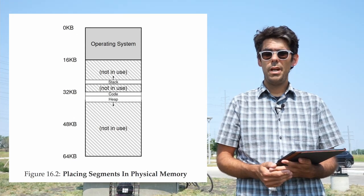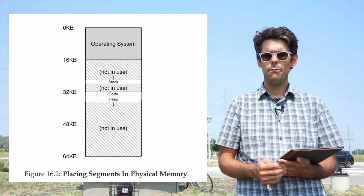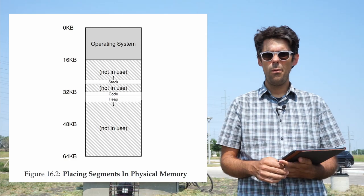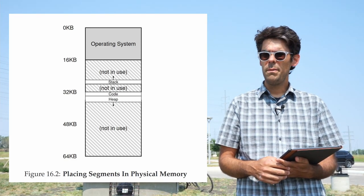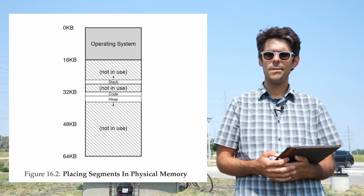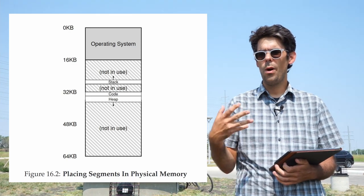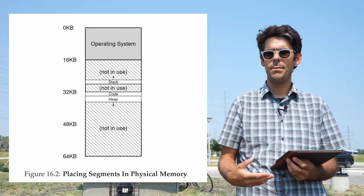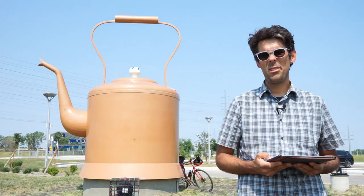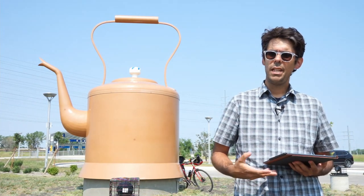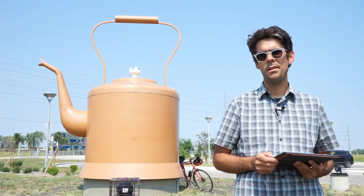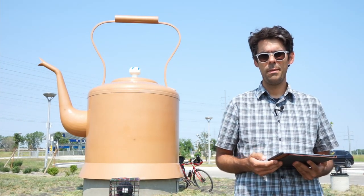This solves the issue of internal fragmentation — we no longer have a giant chunk of memory in between those segments that's allocated but not used — but now we have a problem of external fragmentation. These segments that we're allocating can have different sizes. The heap, for example, is going to grow as the user process increases the amount of dynamic memory it requires. So we've introduced the problem of external fragmentation. It works better in one case — we have more free memory for more processes — but we've got a new problem.